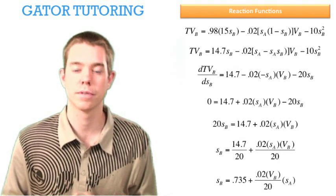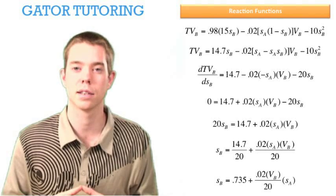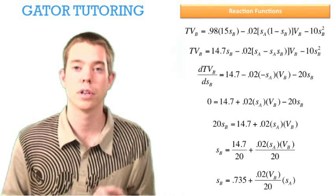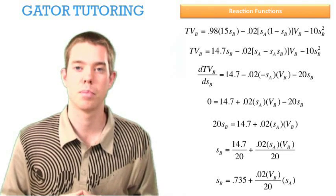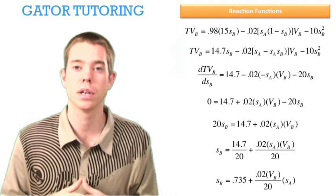Why did I do this? It's because SA is our variable. So everything else multiplied—the 0.02*VB divided by 20—that whole function is our slope. We're interested in finding the change in slope. So we want to isolate that by itself. The 0.735, that's our intercept on our axis. And that 0.02*VB divided by 20, that's our slope.